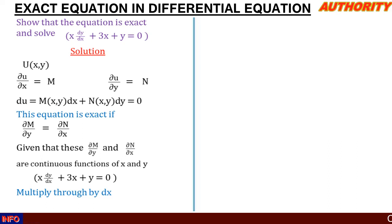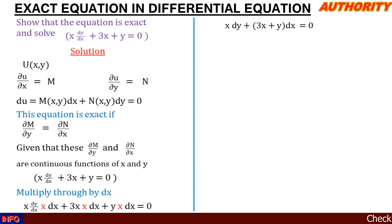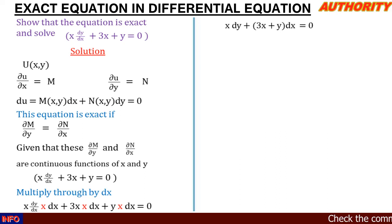Multiplying through by dx gives us: x dy + (3x + y)dx = 0, because 3x times dx plus y times dx lets us factor out dx to get (3x + y)dx. Rearranging the equation, we have: (3x + y)dx + x dy = 0.